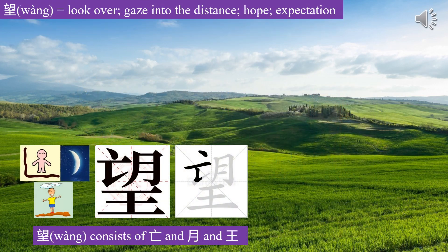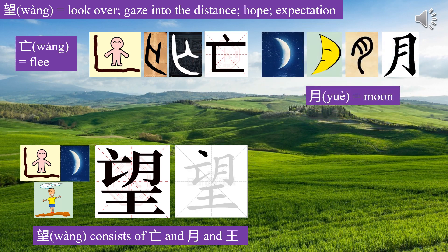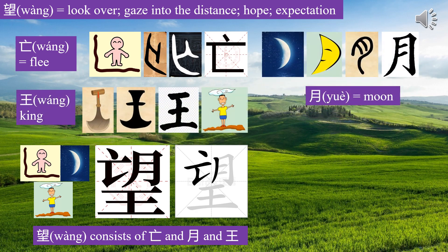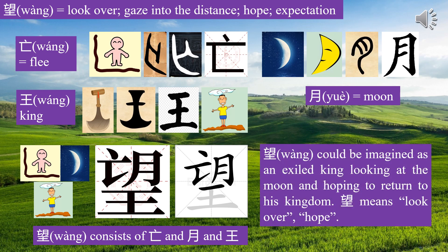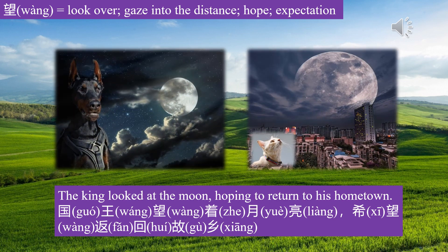Let's learn character Wàng (望). Wàng consists of Wáng (王), Yuè (月), and Wáng (亡). Wàng could be imagined as an exiled king looking at the moon and hoping to return to his kingdom. Wàng means look over, hope. The king looked at the moon, hoping to return to his home town. 国王望着月亮，希望返回故乡。